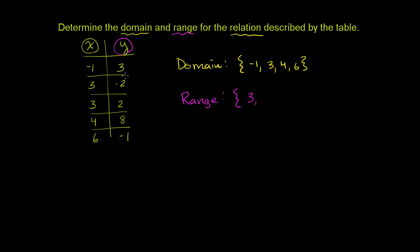So the range here, our y value can take on the value 3. It can take on the value negative 2. It can take on the value 2. It can take on the value 8. And it can take on the value negative 1. And we're done. These are the x values for which this relation is defined, and these are all the y values, all of the outputs of the relation that it can take on.